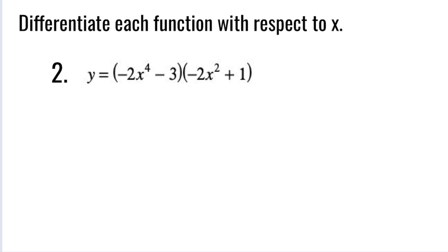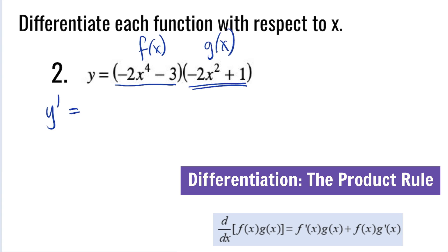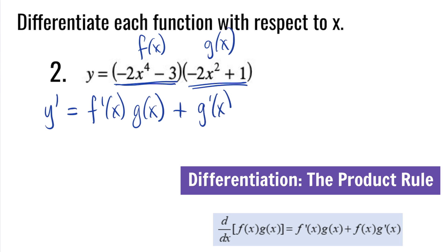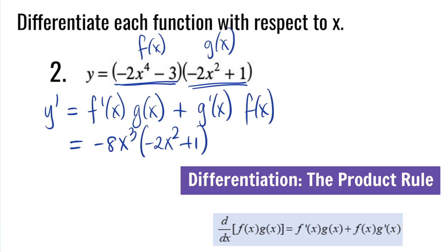Question number 2: y is equal to negative 2x to the fourth minus 3 multiplied by negative 2x squared plus 1. The first factor is our f(x) and the second is our g(x). Using the product rule, we find the derivative of f(x), which is negative 8x cubed, and multiply it by g(x), negative 2x squared plus 1. Plus, the derivative of g(x) is negative 4x, multiplied by f(x), negative 2x to the fourth minus 3.